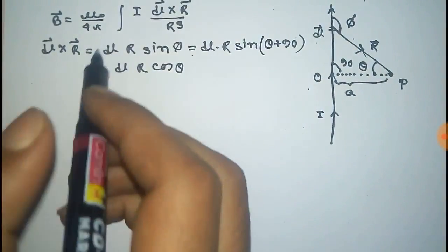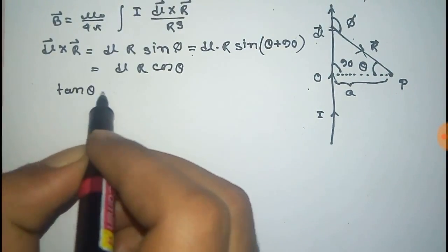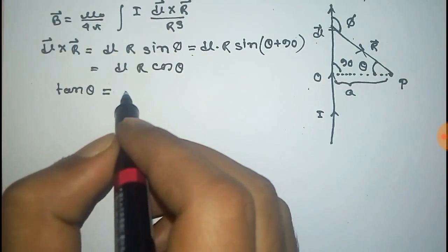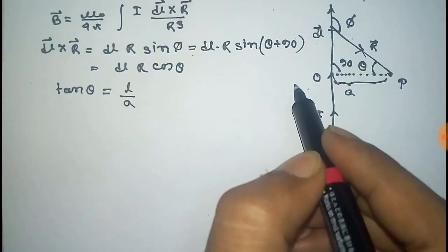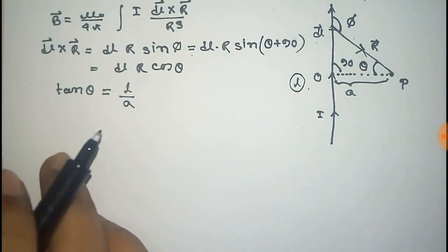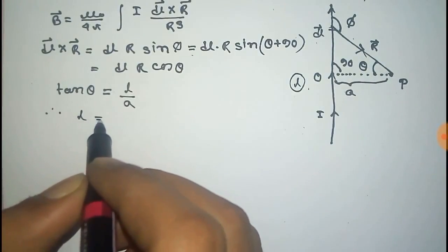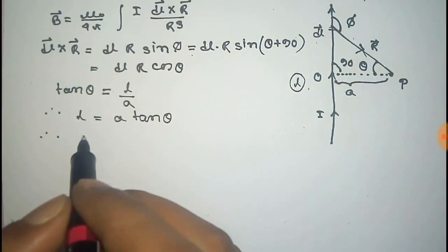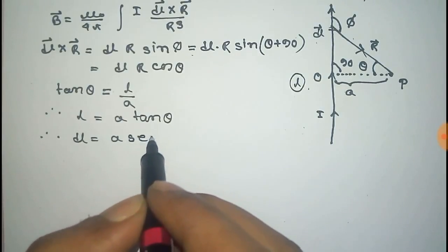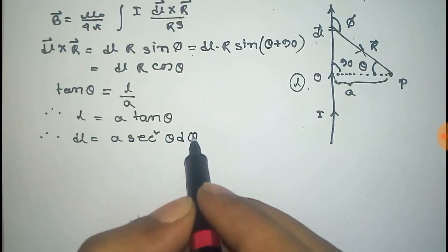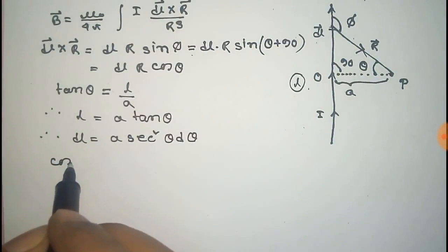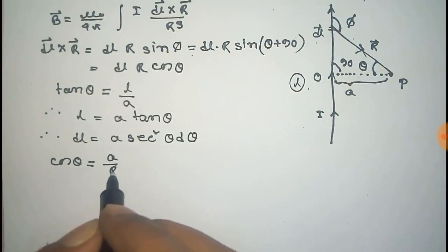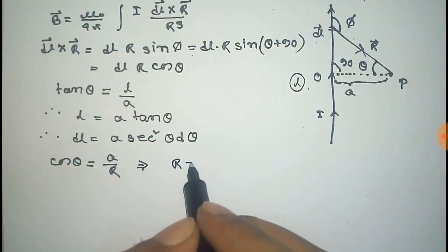From the diagram, we get that tan(theta) equals L by A, that is the length of the wire divided by A. So this length L equals A·tan(theta). After differentiating, we get dL equal to A·sec²(theta)·dθ. Also from the diagram, cos(theta) equals A by R, so R equals A·sec(theta).